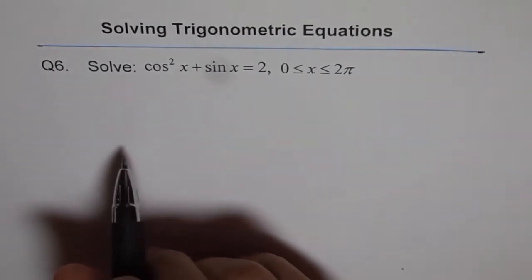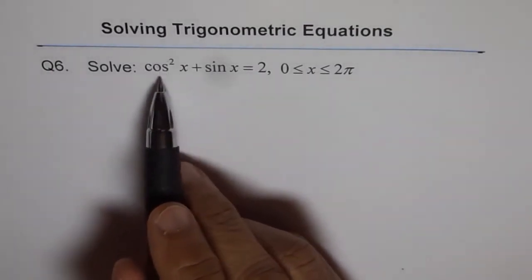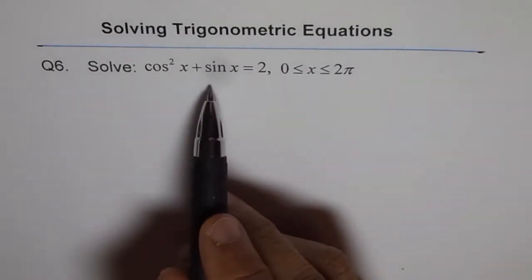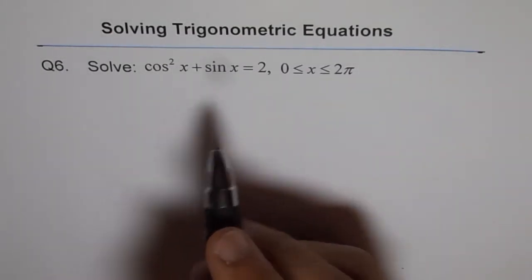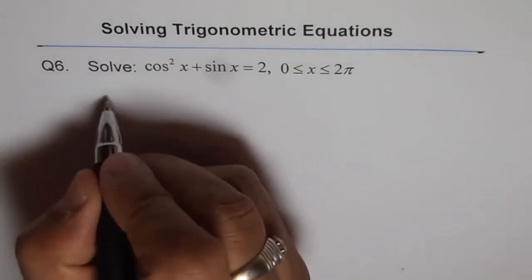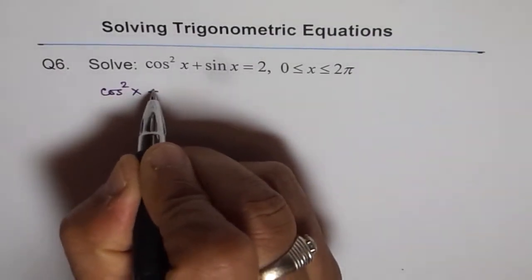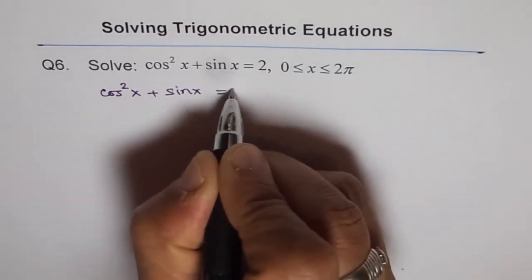In these questions, we can write cos squared x as 1 minus sin squared x, and then we will get a quadratic equation in sin, and then we can solve for it. So that is what we are going to do. Let me copy the question first: cos squared x plus sin x equals 2.